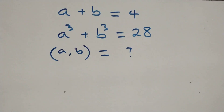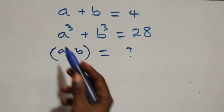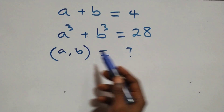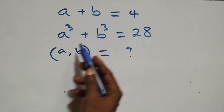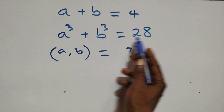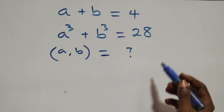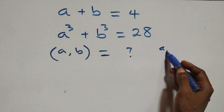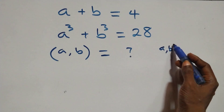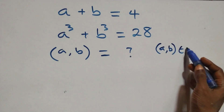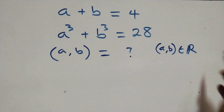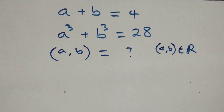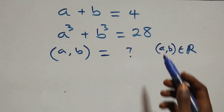Hello, you're welcome. How to solve for a and b in this nice system of equations: a plus b equals 4, and a cubed plus b cubed equals 28. Here, a and b are members of the real numbers ℝ. Let's consider the solution.